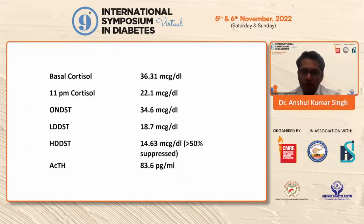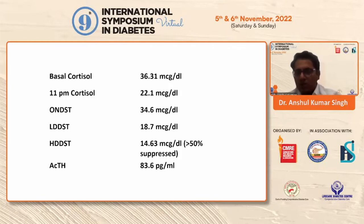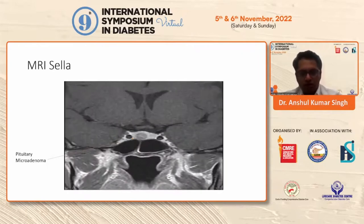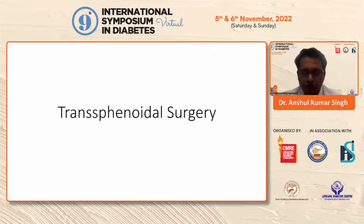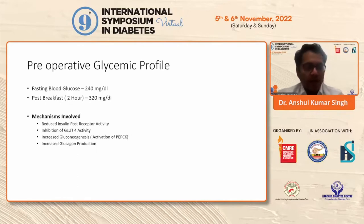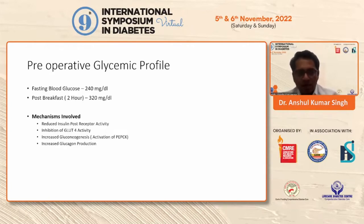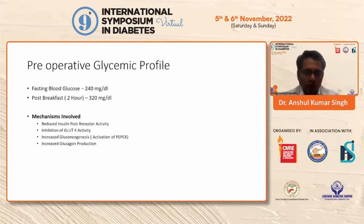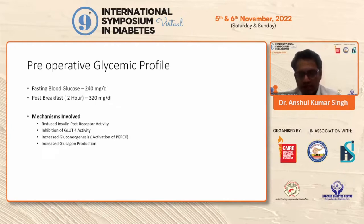We went for the basal cortisol, which was raised. The overnight dexamethasone and the low-dose dexamethasone all pointed towards a pituitary adenoma secreting ACTH. Therefore, we went for a dynamic contrast MRI of the pituitary, and a pituitary microadenoma was diagnosed. We subjected the patient to transsphenoidal surgery. The preoperative glycemic profile showed fasting blood glucose of 240 despite being on insulin, and post-breakfast was 320. The mechanism involved decreased insulin post-receptor activity, inhibition of GLUT4 activity, increased gluconeogenesis by stimulation of PEPCK, and increased glucagon production.